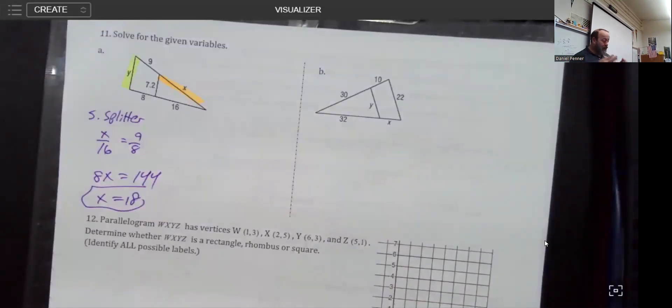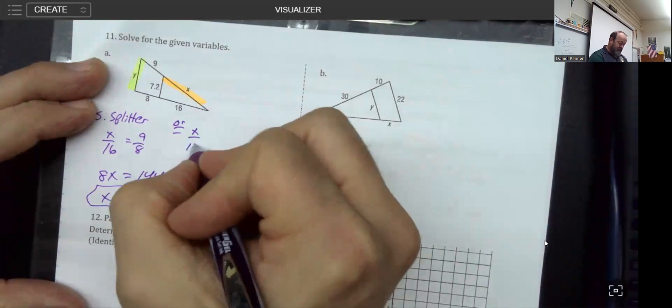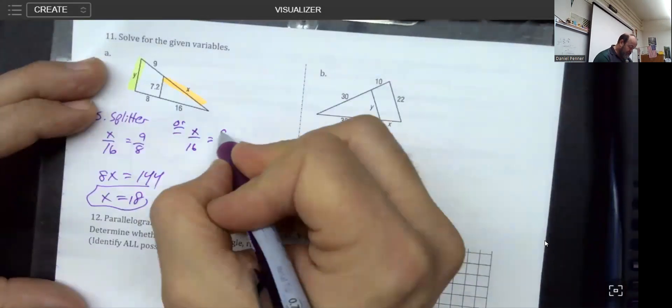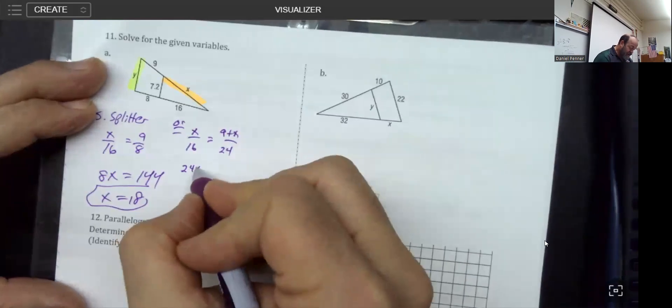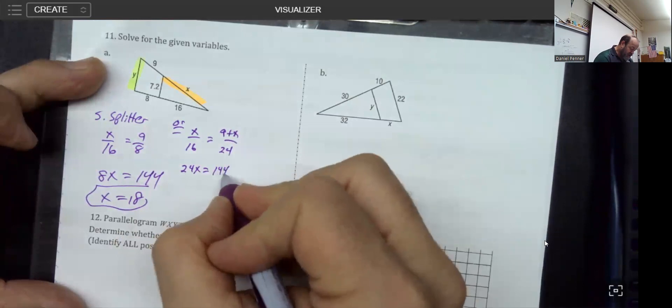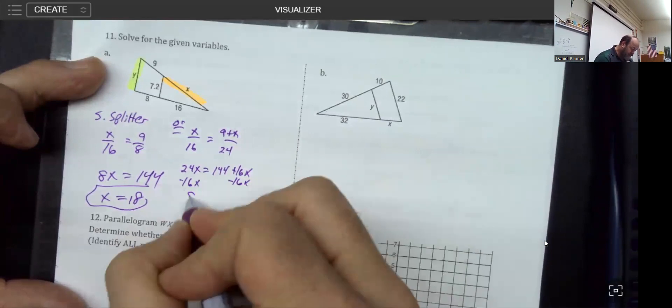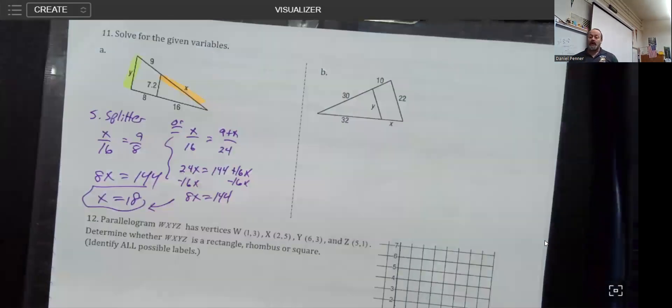I could have also done something a little more aggressive, the old way before we had side splitter. I could say the top side is to the bottom side as the top side 9 plus x is to the bottom side. That's going to be 144 plus 16x. As soon as you subtract 16x from both sides, you get 8x equals 144, which we've already seen. Looking at it through a variety of lenses is not a bad idea.